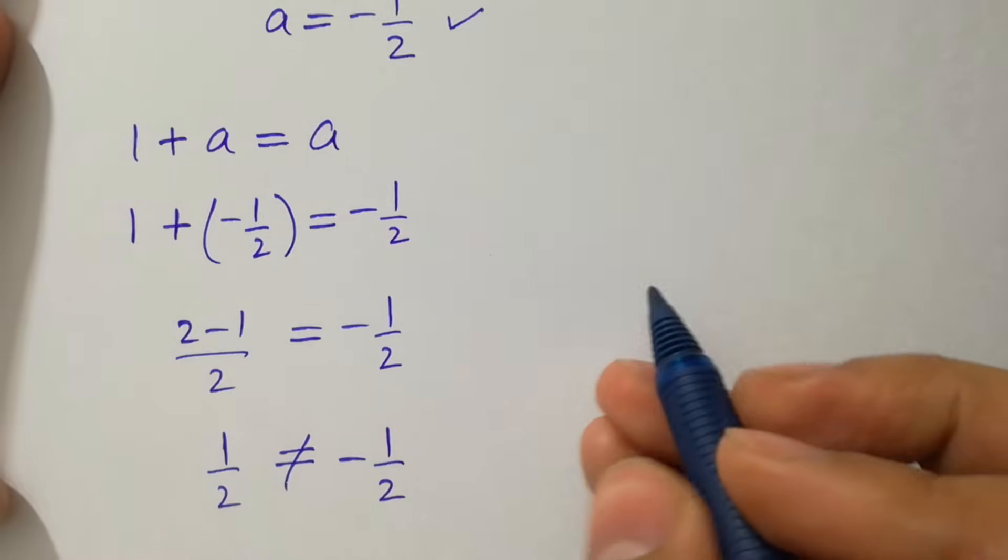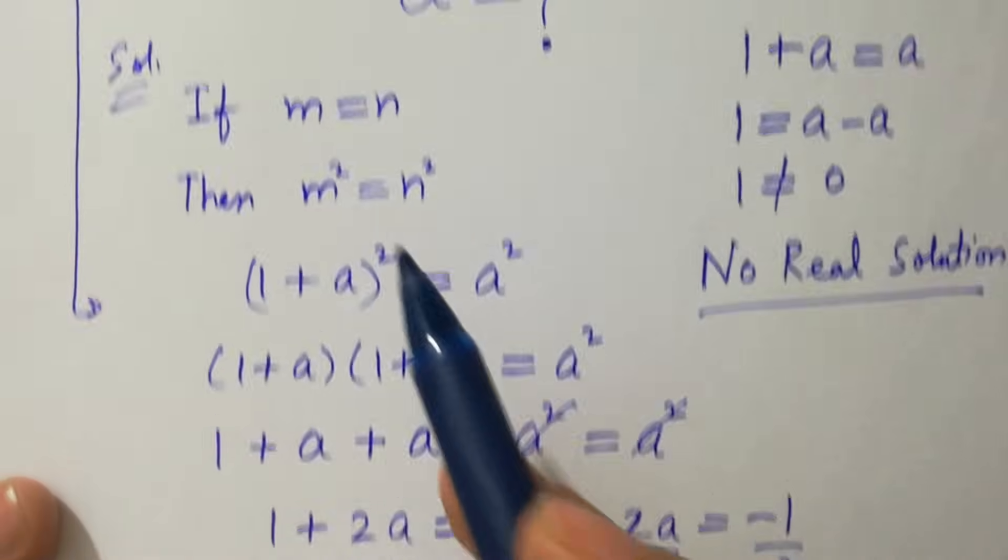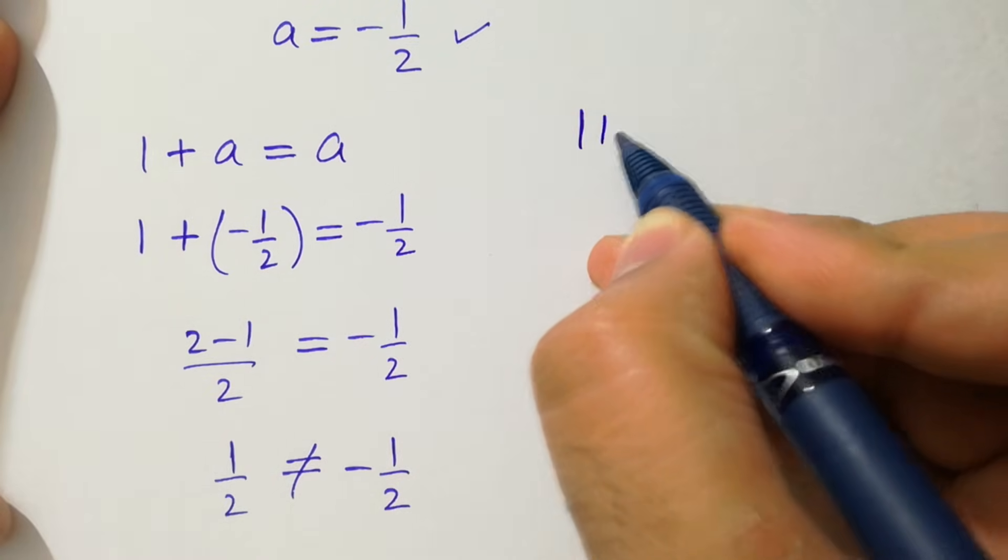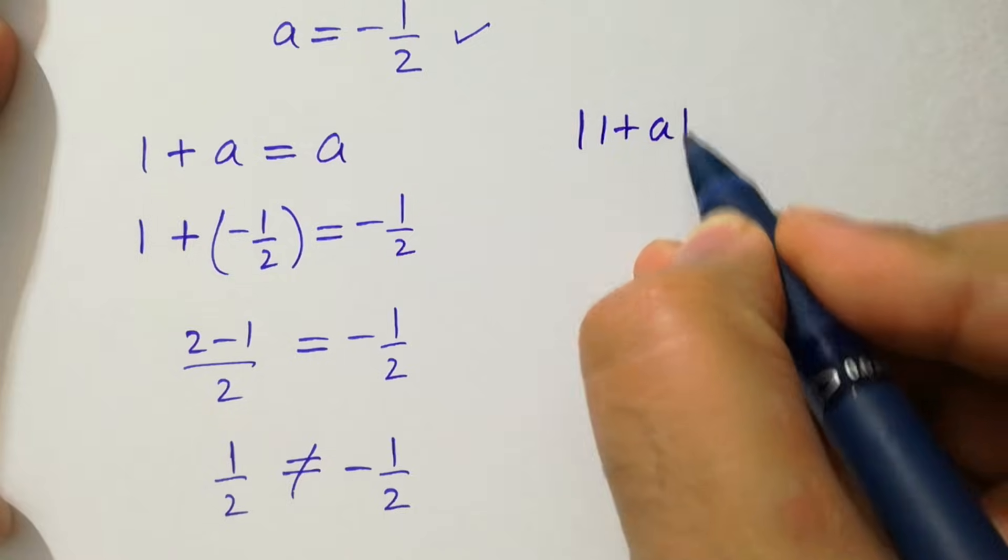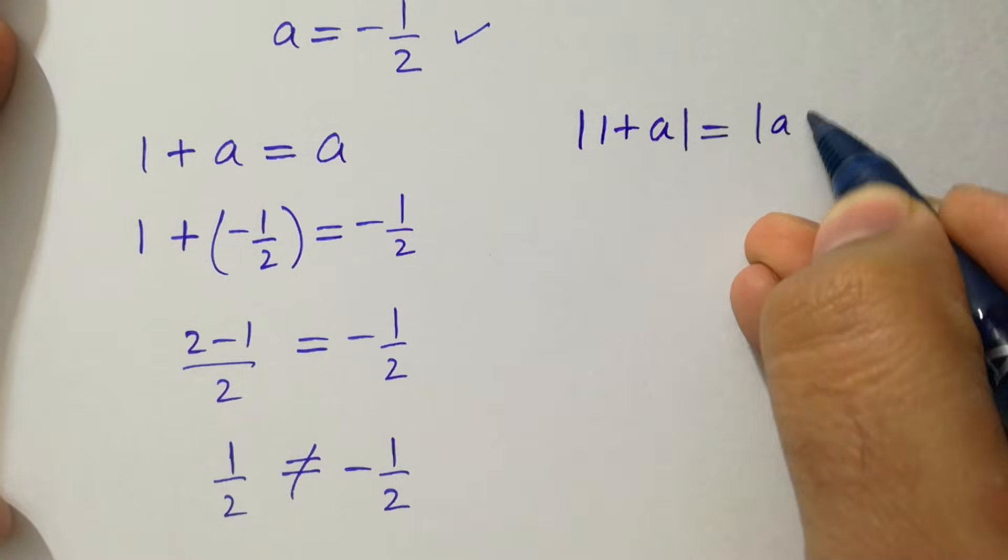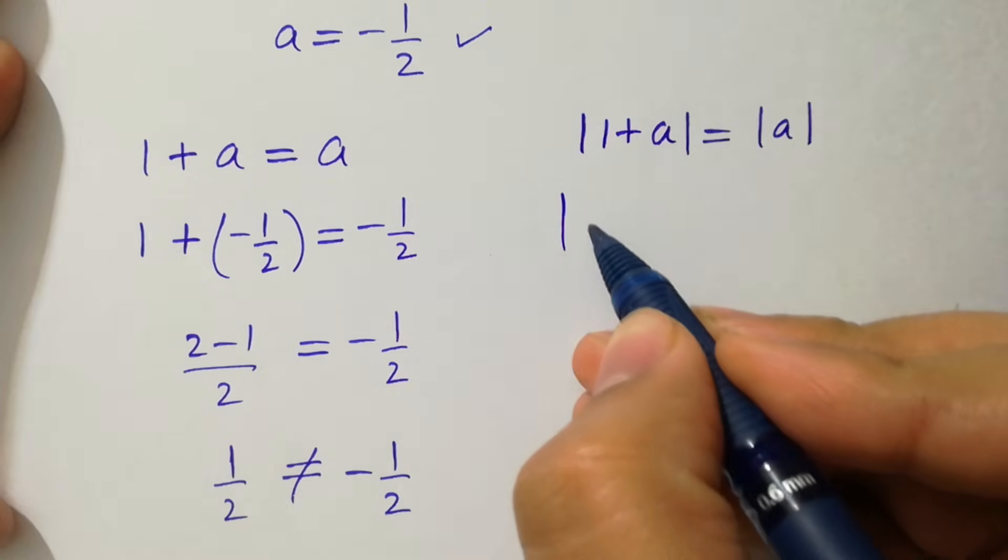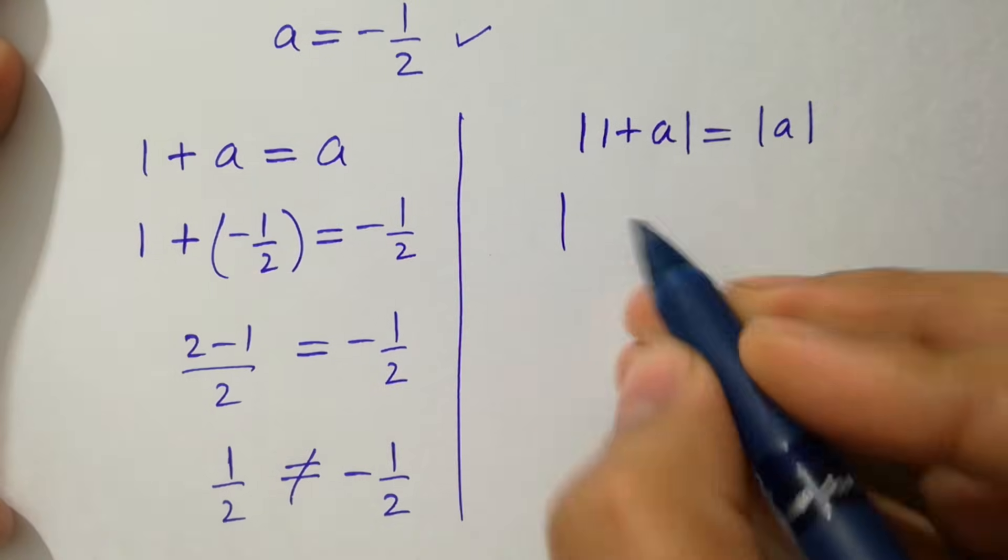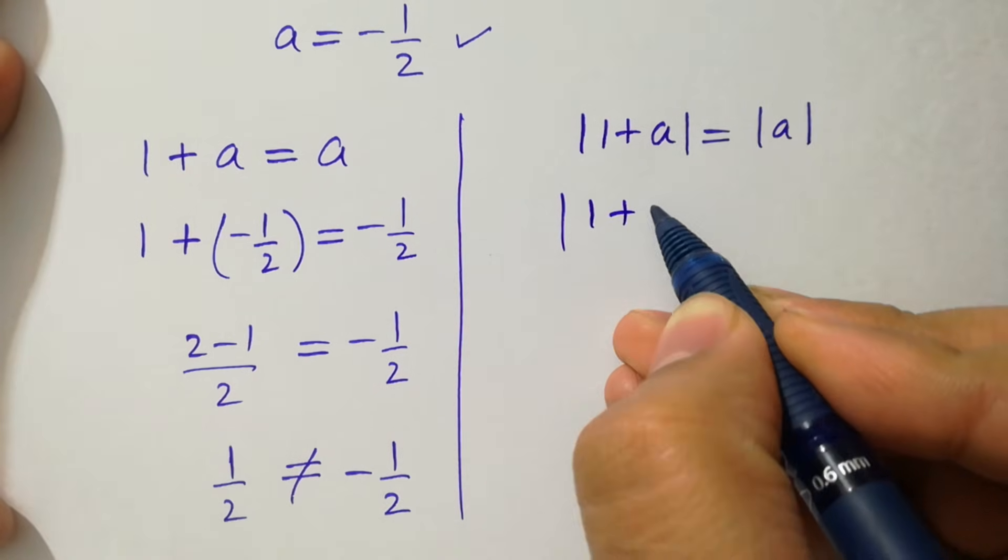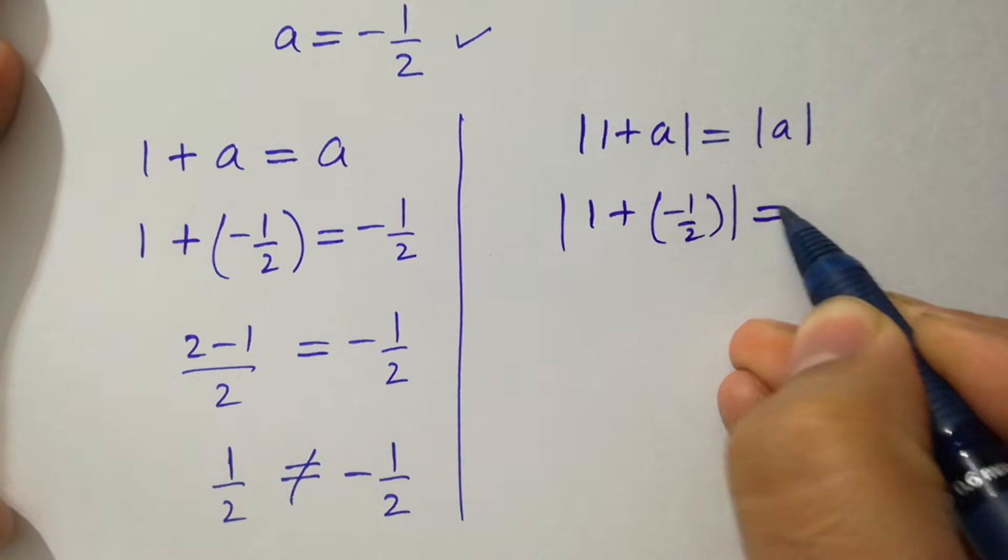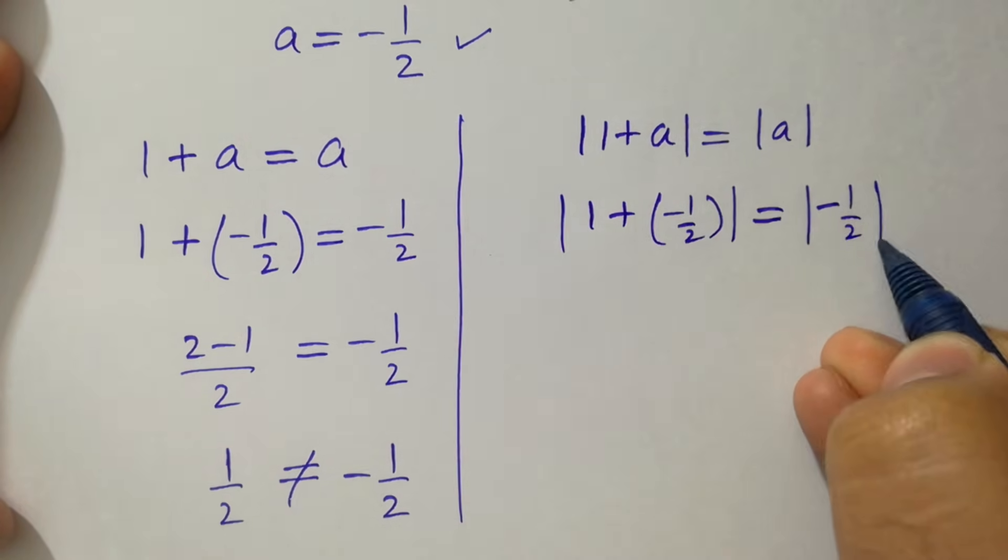And if you take as m = n, m² equals n². If you take modulus on both sides of this equation, |1 + a| = |a|. You can see here |1 + (-1/2)| = |-1/2|.